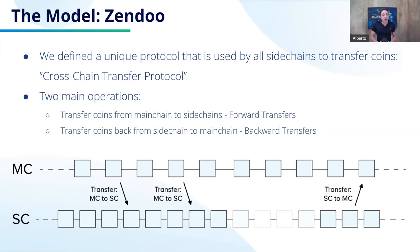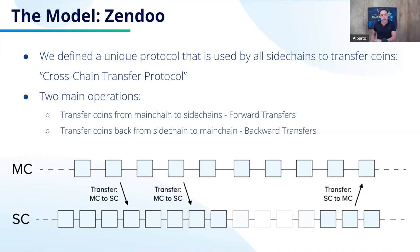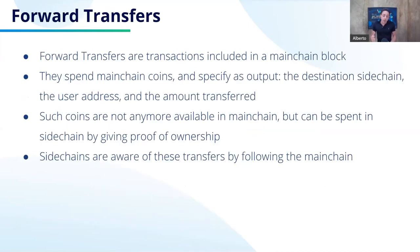The main operations of this protocol are, as we said before, transferring coins from the main chain to sidechains — which we call forward transfers — and transferring coins from a sidechain to the main chain, which is called a backward transfer. In the schema below you can see a sidechain and the main chain where the squares represent blocks and the arrows represent transfers. A much more detailed schema will come in the next slide.